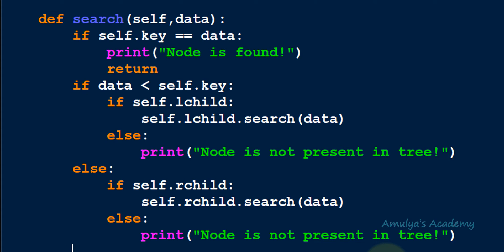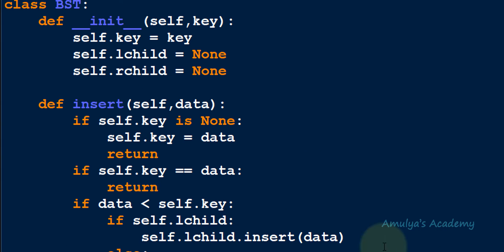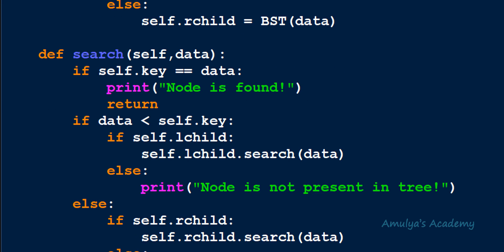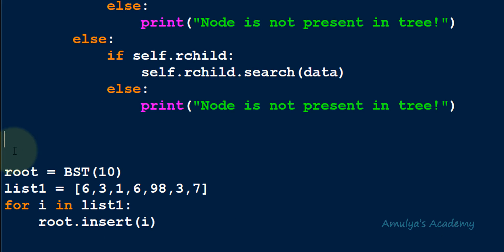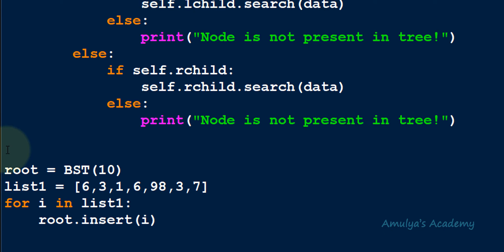You may ask about duplicate values. In the previous tutorial while writing the insert method, we handled duplicates by ignoring them. So our tree will not contain duplicate values, and there is no need to write a condition for that here. Let's call this method and see how it works.